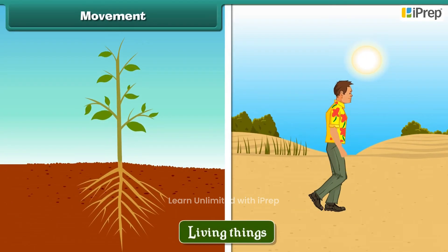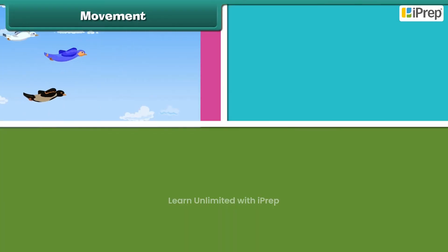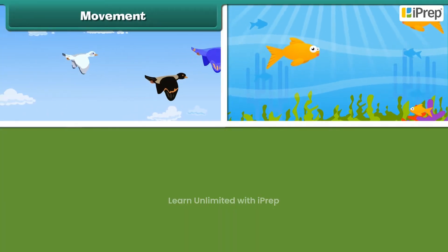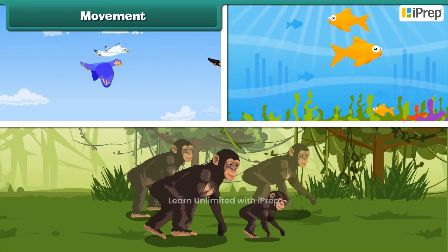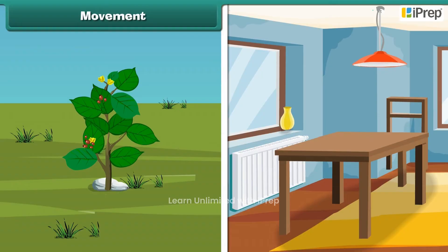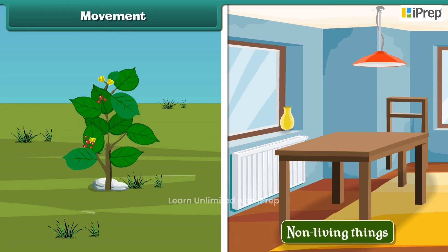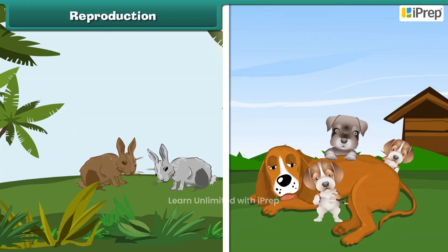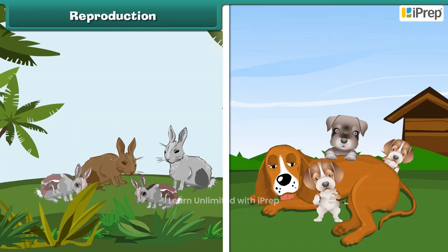Living things show movement — birds fly in the air, fish swim in water, and animals run. Plants are an exception: though living, they cannot move from one place to another. Non-living things, on the other hand, do not show any movement by themselves.